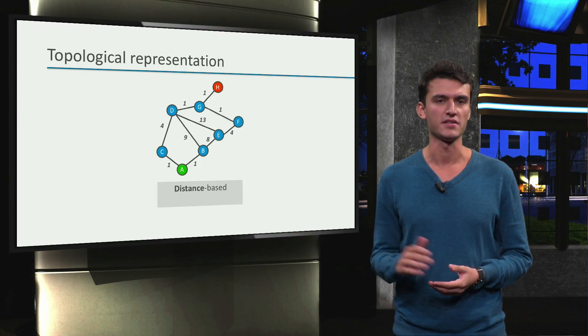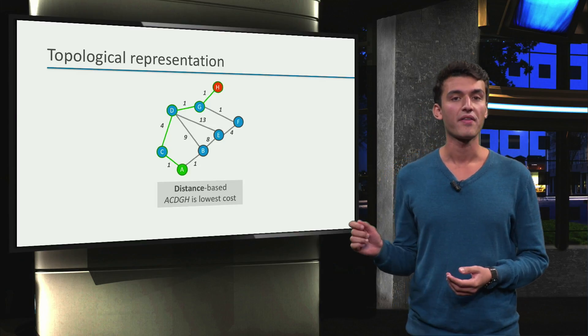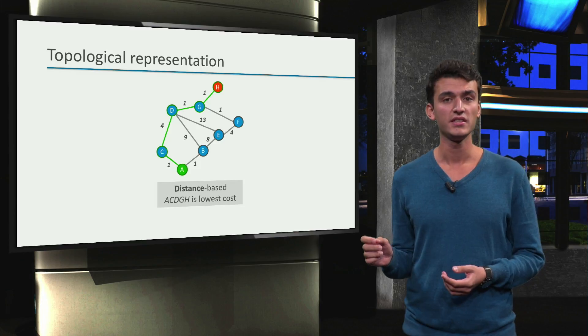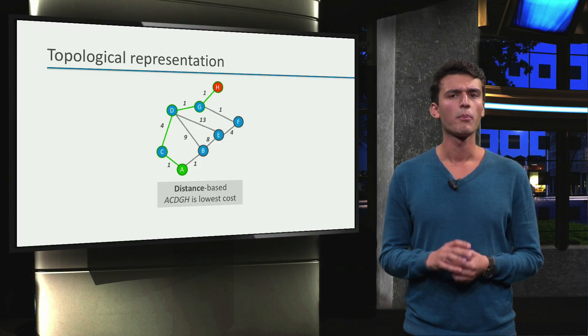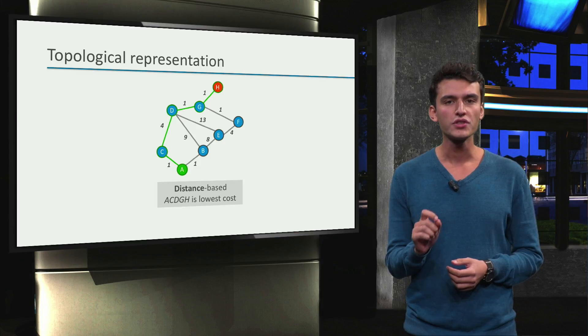In this example it's fairly easy. Path A, C, D, G, H has the lowest cost. But remember that we want the shortest distance.